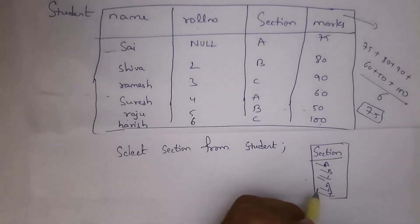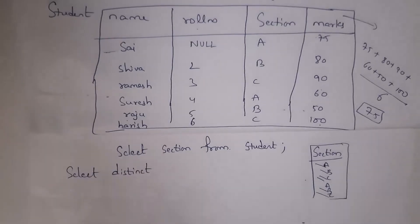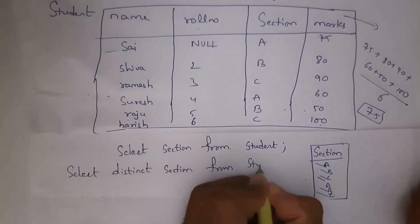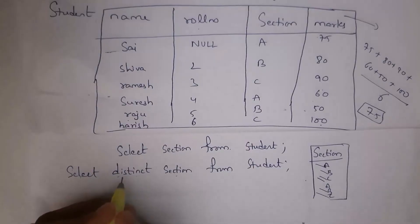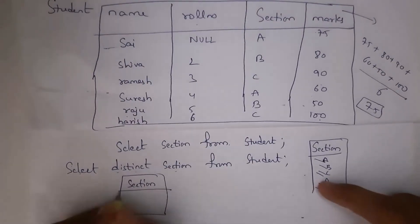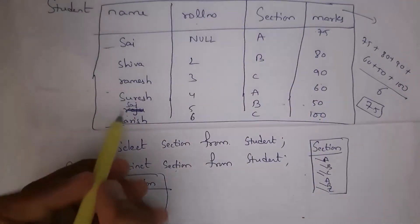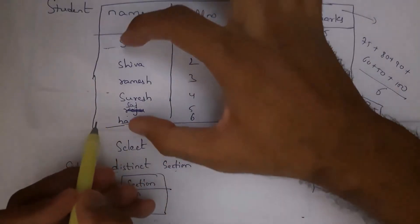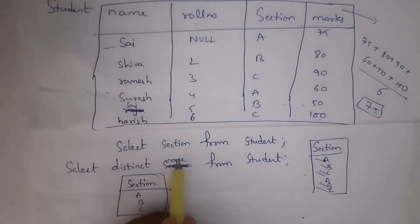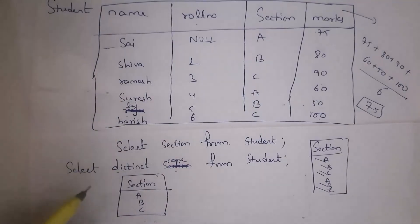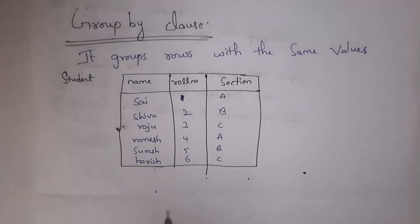The output shows: A, B, C, A, B, C — A is repeated twice, B is repeated twice, C is repeated twice. I don't want duplicates, so I use the DISTINCT keyword: SELECT DISTINCT section FROM student. This avoids duplicates and gives the output: A, B, C. For example, if 'Sai' is repeated twice in the name column, SELECT DISTINCT name FROM student will display Sai only once, along with Shiva, Ramesh, Suresh, and Harish.